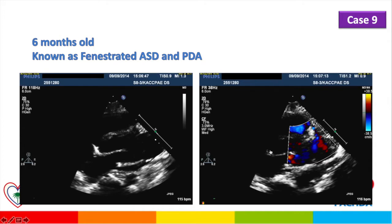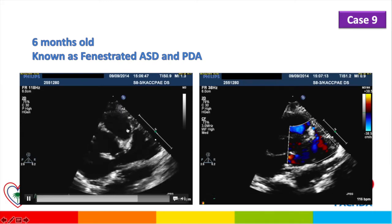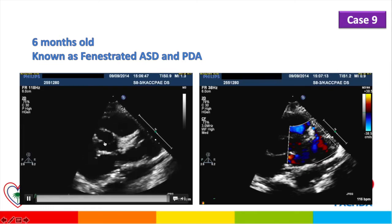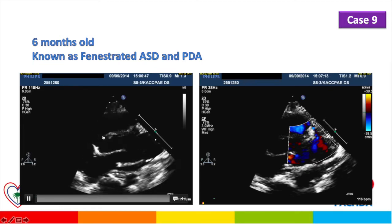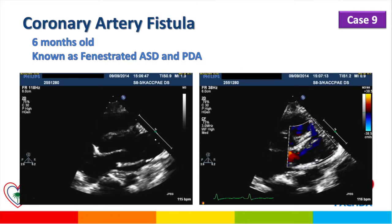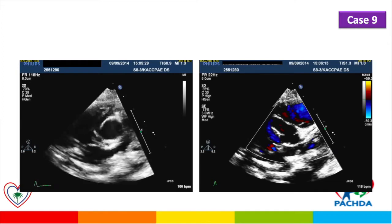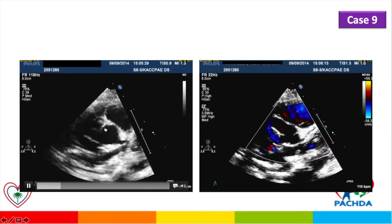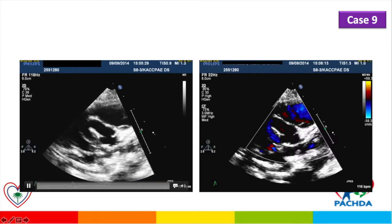This is a 6-month-old with a known fenestrated atrial septal defect coming for follow-up. The aorta and left coronary artery appear normal in size and caliber, but on careful inspection there is a dilated origin of the right coronary artery. Here, in cross section, the proximal part of the right coronary artery is seen to be significantly dilated.